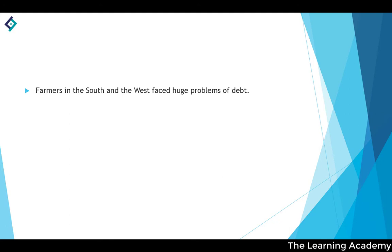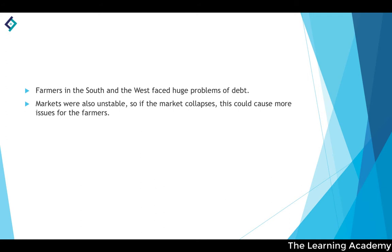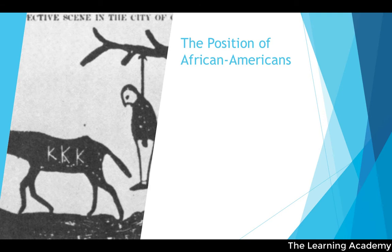However, farmers in the South and West faced huge problems of debt, and markets were unstable. The Homestead Act, while providing incentives, wasn't entirely positive, as people settling in the West still faced significant debt problems.